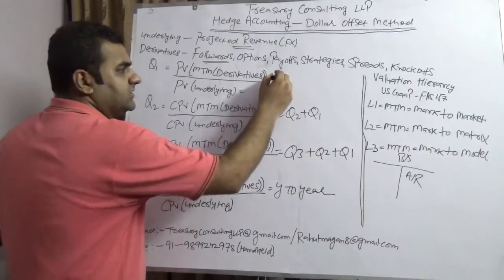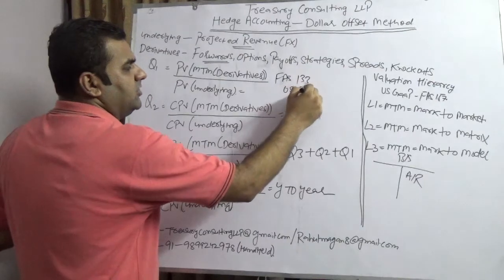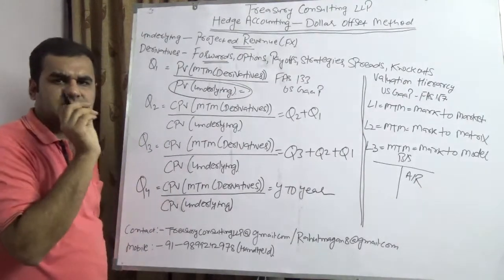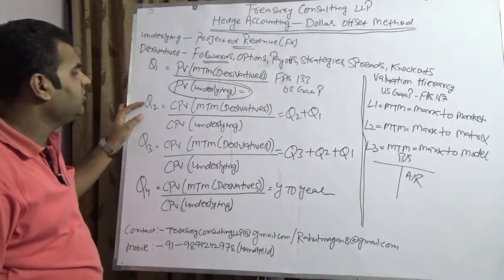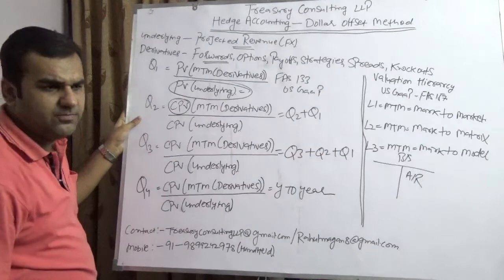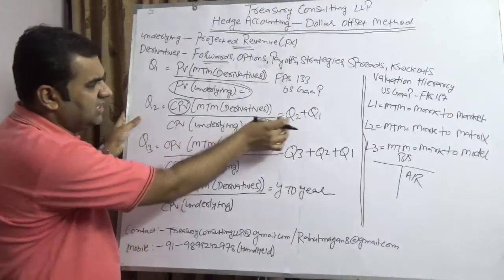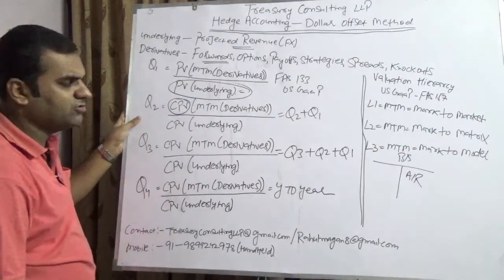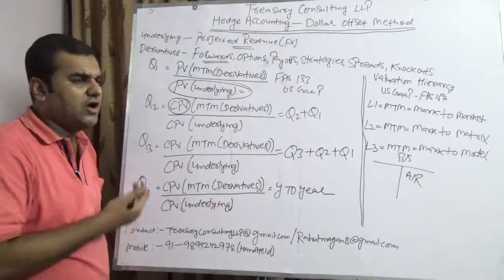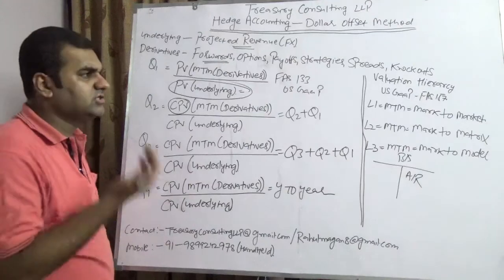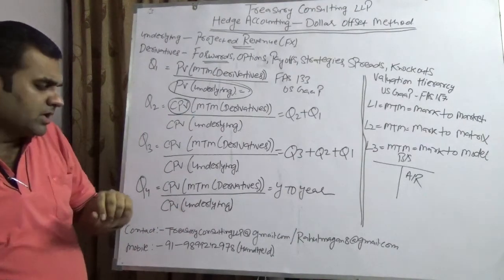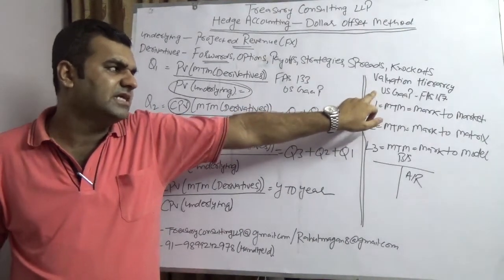In financials, on the asset side you have AR. AR can be revalued, but projected AR cannot be revalued. But if you are applying the dollar offset method as per FAS 133 US GAAP, then you have to do the fair valuation of the underlying, which here is your forecasted receivables in foreign currency. When you go to Quarter 2, you calculate the cumulative present value — CPV stands for cumulative present value — of the M-to-M of the derivative divided by the cumulative present value of the M-to-M of the underlying. This is Q2 plus Q1, and the same applies for Q3 and Q4. But how do you determine whether this hedge is effective or not, and whether the result hits the P&L or the balance sheet?